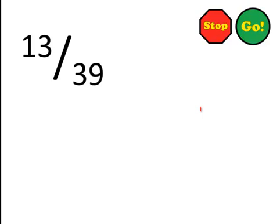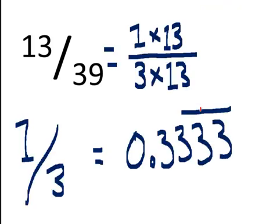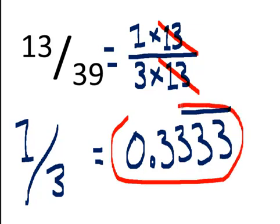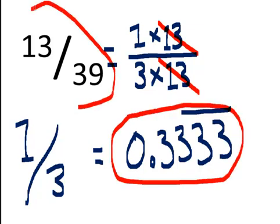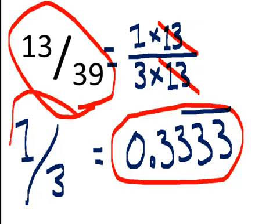13 thirty-ninths — click on the stop sign, give it a whirl. Let's see how you did. Turns out 13 can be factored as 1 times 13 and 39 can be factored as 3 times 13. This 13 cancels with that 13, leaving us with 1 third. If we did the long division, we would get the same decimal equivalent — it doesn't matter if we use 1 third or 13 thirty-ninths.